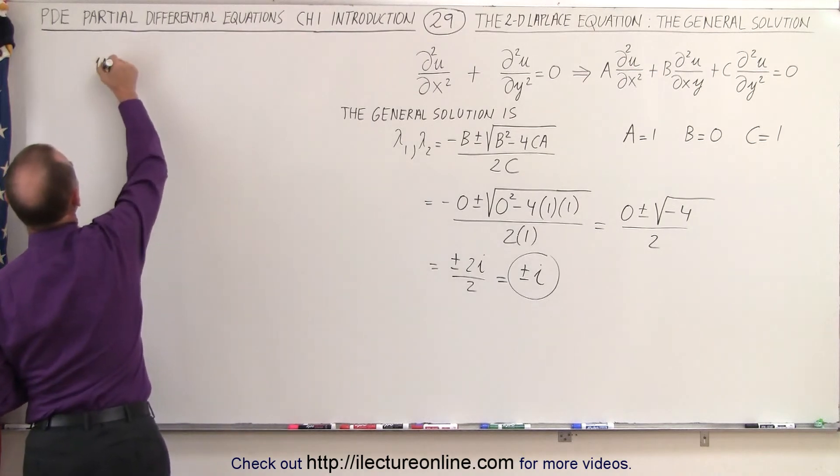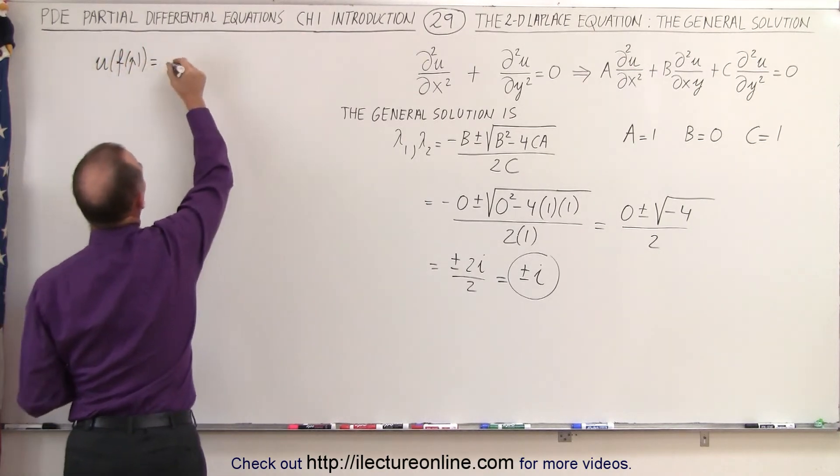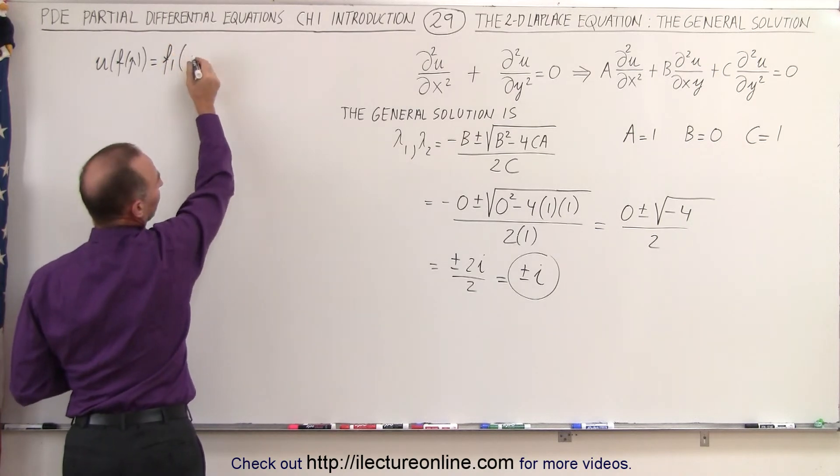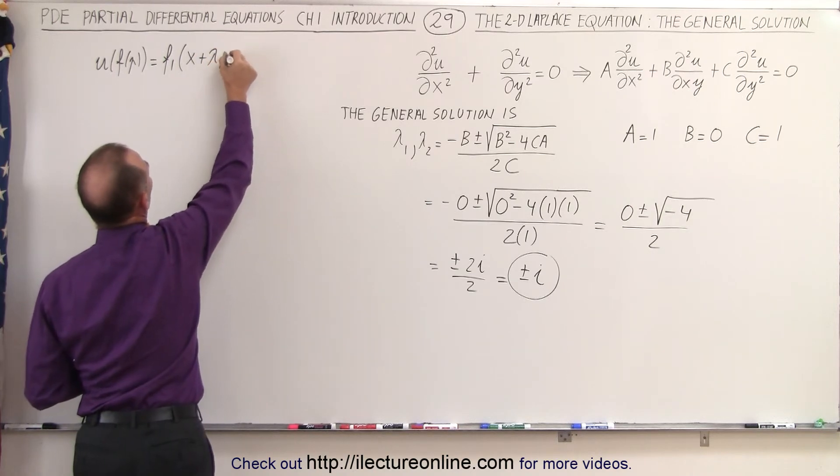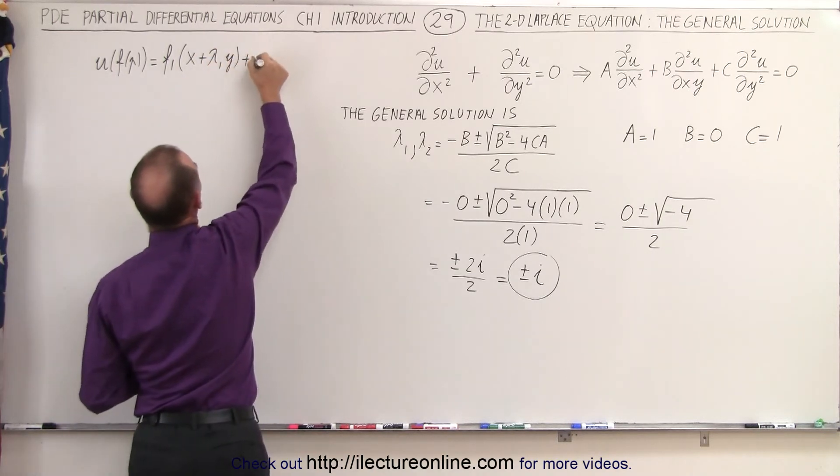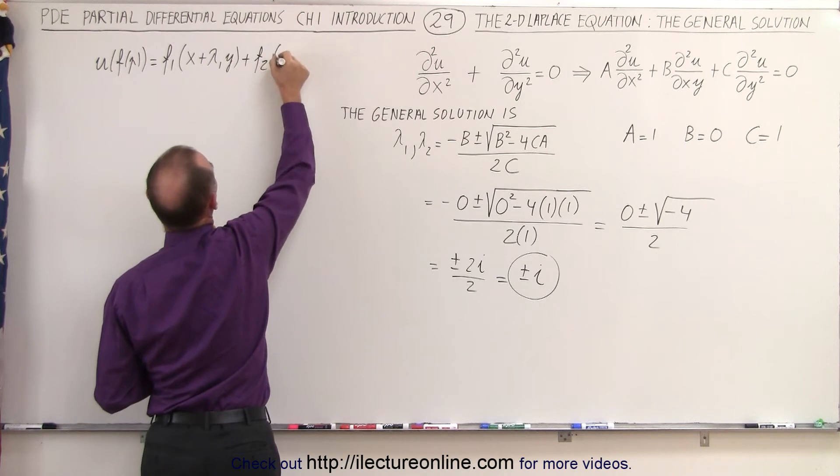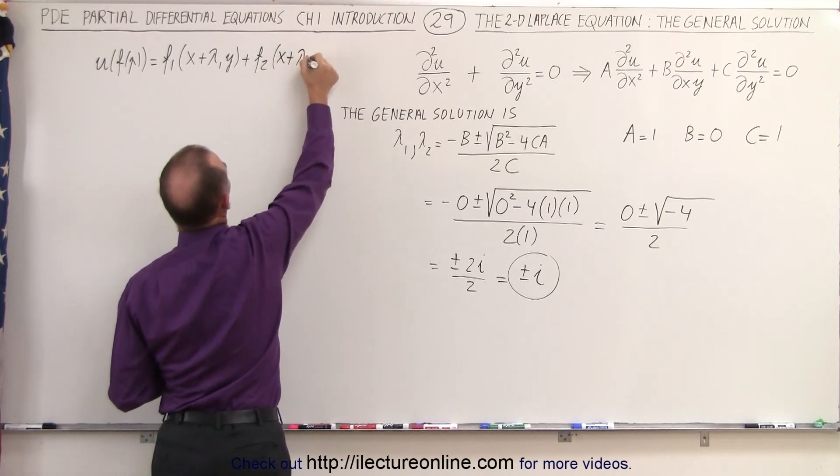Let me write it where I have a little bit more room. So we can say that u, that's a function of p, is going to be equal to f1, and that would be written as x plus lambda 1 y, plus a second function, let's call f2, x plus lambda 2 y.